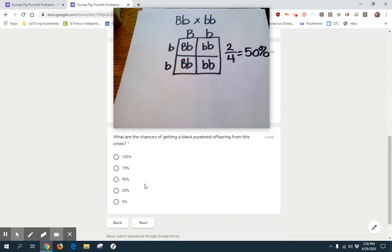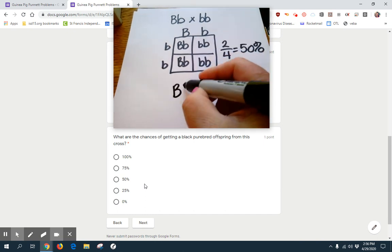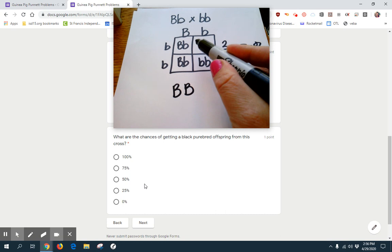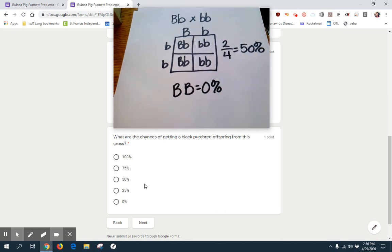And let's see, the last question, the chances of getting a black purebred. A black purebred would be big B, big B. And as you see in our box here, we don't have any possibility of getting that. So we have a 0% chance of getting the big B, big B.